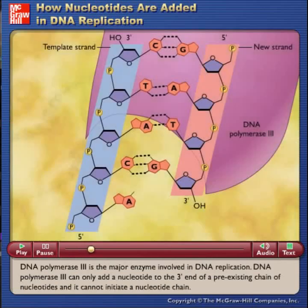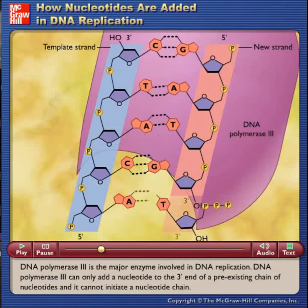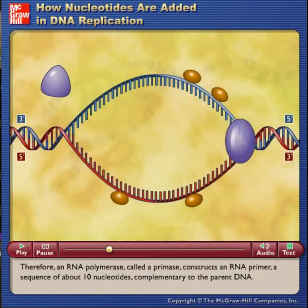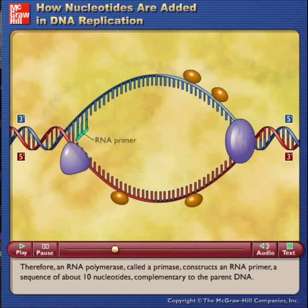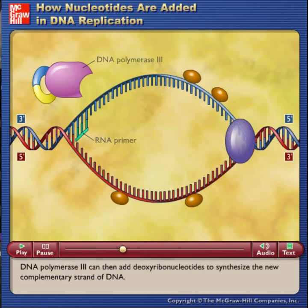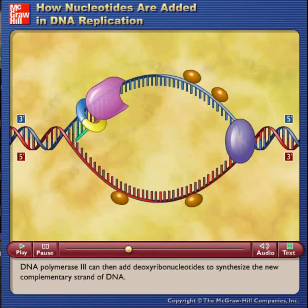DNA polymerase III is the major enzyme involved in DNA replication. DNA polymerase III can only add a nucleotide to the 3' end of a pre-existing chain of nucleotides and it cannot initiate a nucleotide chain. Therefore, an RNA polymerase called a primase constructs an RNA primer, a sequence of about 10 nucleotides, complementary to the parent DNA. DNA polymerase III can then add deoxyribonucleotides to synthesize the new complementary strand of DNA.